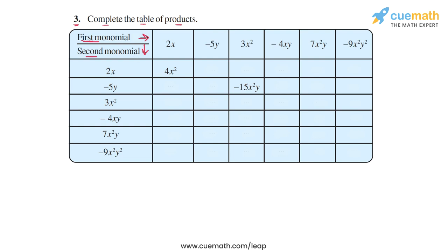For example, if you take 2x as your first monomial from the topmost row and 2x as your second monomial from the leftmost column, the product you get is 4x², which is already mentioned in this cell, because 2 × 2 is 4 and x × x is x².